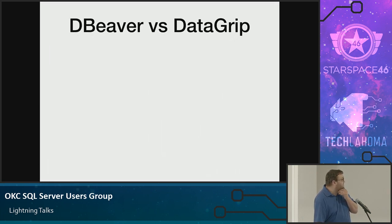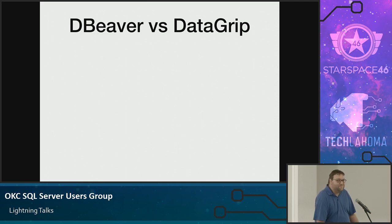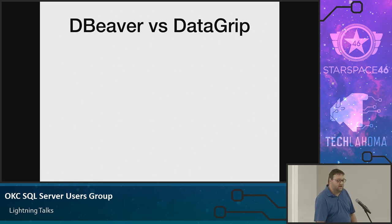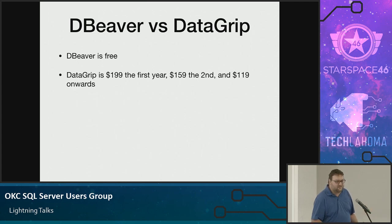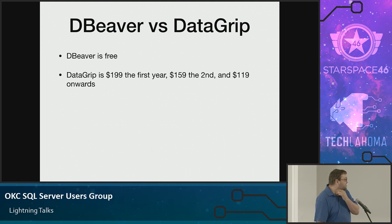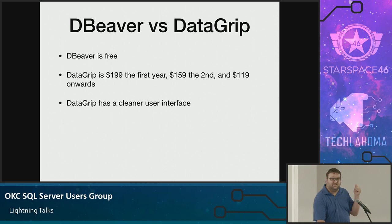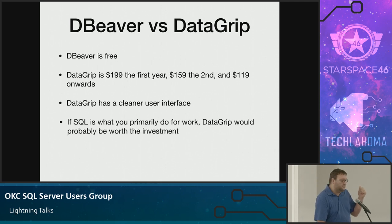Some of you may have used DataGrip before. DataGrip is a common multi-database interaction tool that's paid. dBeaver is free. DataGrip is $200 a year — that's the cheapest first-year option. You could also do $20 a month. It's $159 the second year and $119 every year after that. DataGrip has a much cleaner user interface, but dBeaver is free.